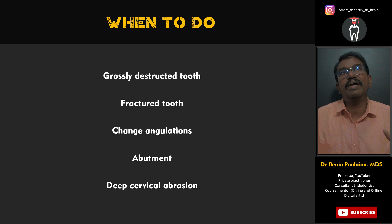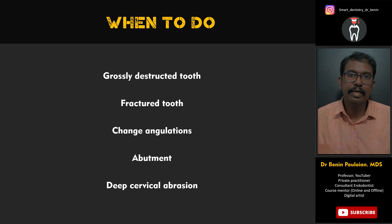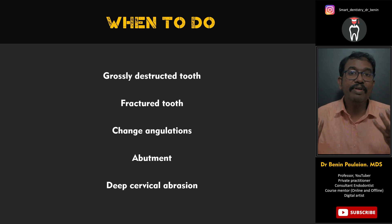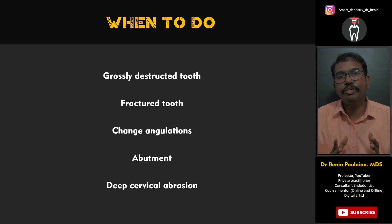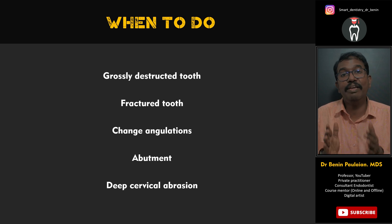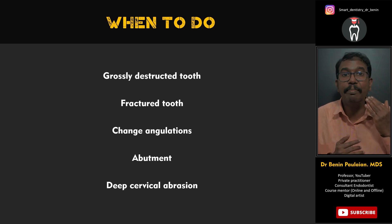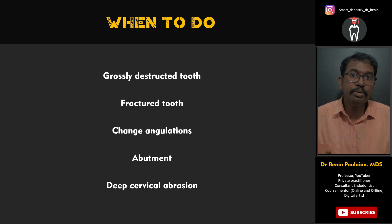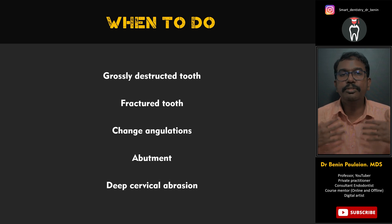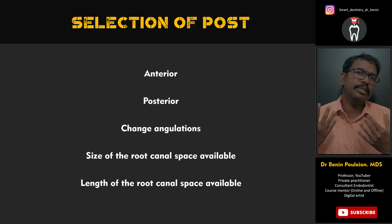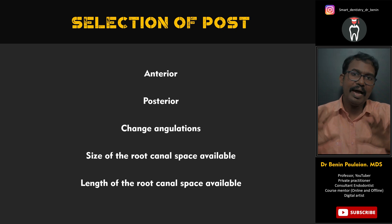Another indication is when placing a fixed partial denture — for example, from canine to canine, the canine should preferably have a post and core, because an FPD creates a lot of lateral forces and a post helps tackle these. Also, when there are deep cervical carious lesions — for example in mandibular premolars where the root canal is visible through cervical caries — a post and core must be placed to rehabilitate that tooth.